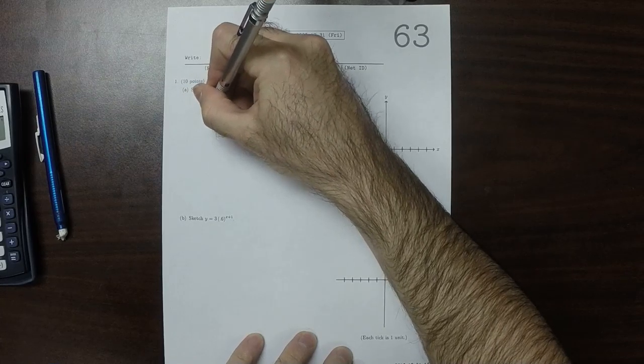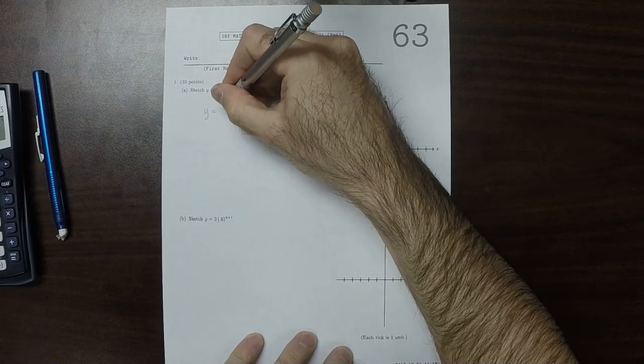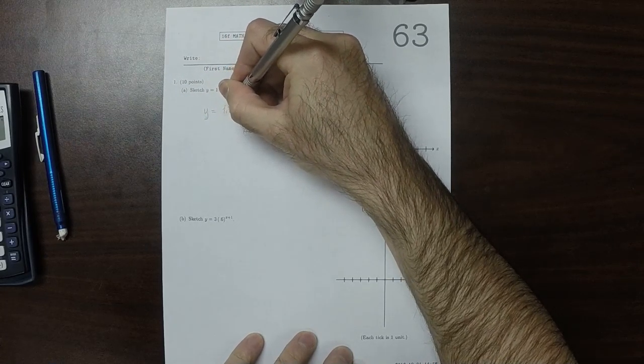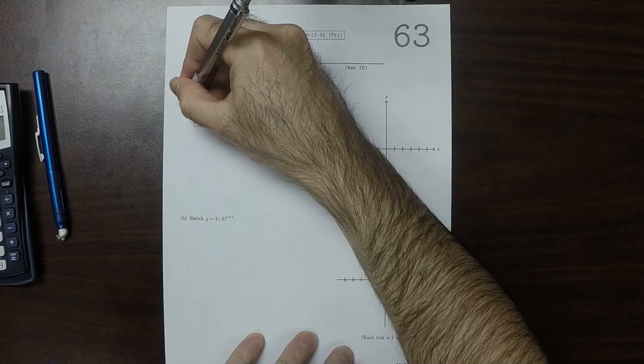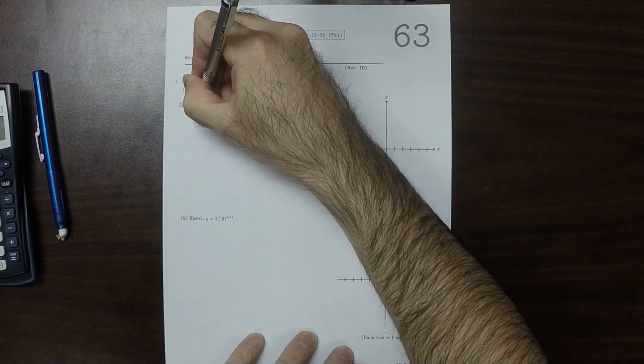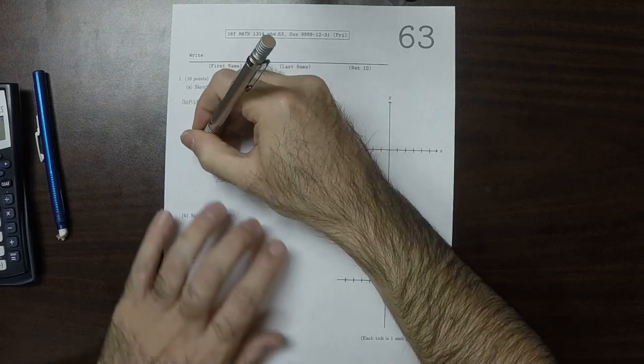So let's consider the plot of y = 1.7^x. So that is to say everything except that minus 3. So let's consider that one by itself.